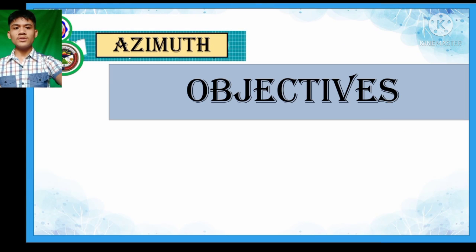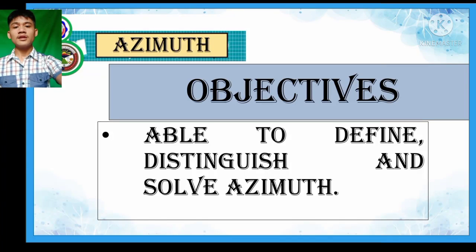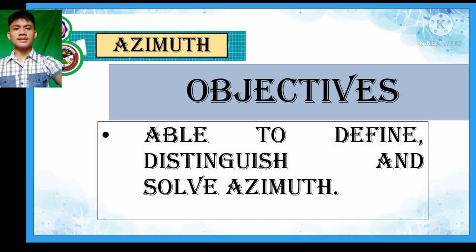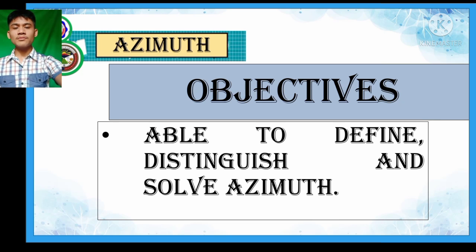So at the end of this video, the objectives are that learners or viewers are now able to define, distinguish, and solve azimuth. Define — since learners or viewers are now able to give a definition of what azimuth is. Distinguish — since at the end of this video, learners are able to compare and evaluate azimuth from the other concept that will be discussed. And of course, to solve the azimuth from a certain given.